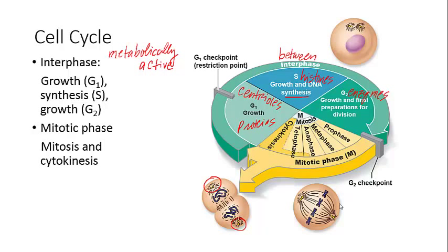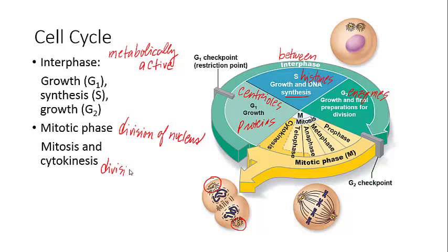During the cell cycle, these three parts of interphase are important to be aware of. Then during the mitotic phase, the M phase, there are two phases. Mitosis is the division of the nucleus itself, which is very important because it ensures that the DNA is equally separated to the daughter cells. Cytokinesis is the division of the cytoplasm. Some textbooks refer to cytokinesis as a part of telophase, but it can also be classified as its own final stage.